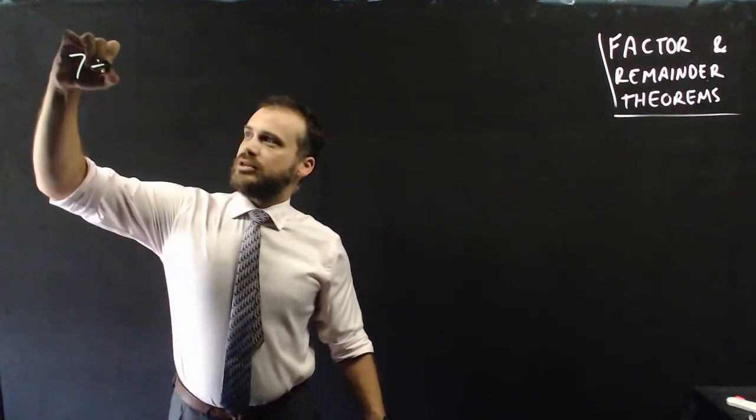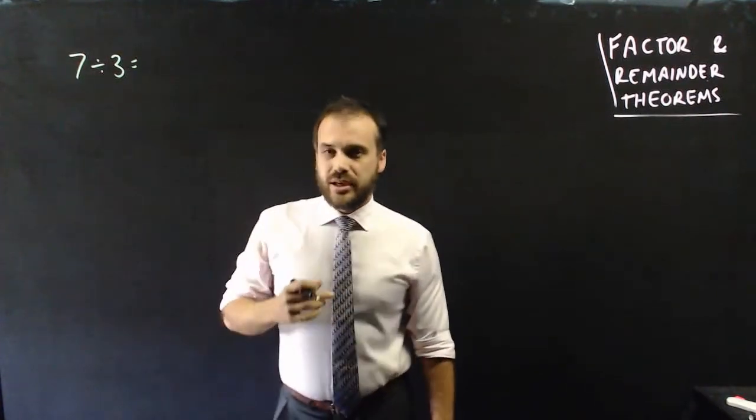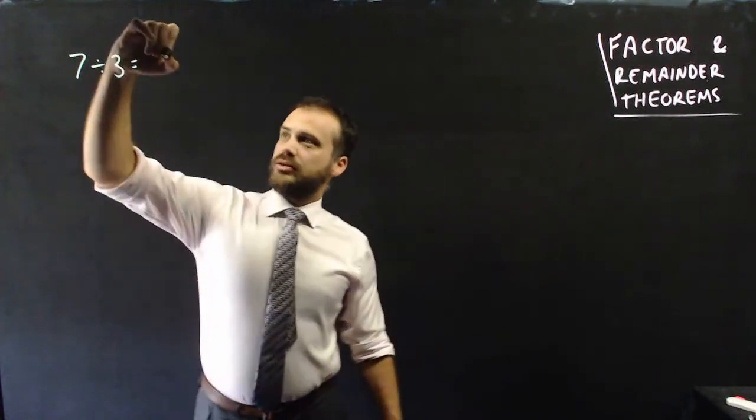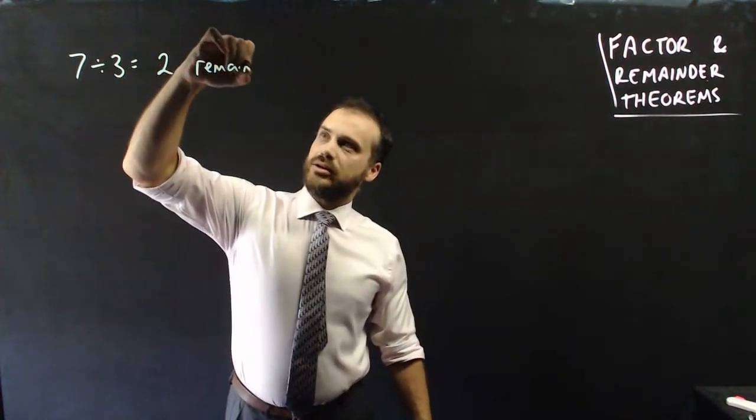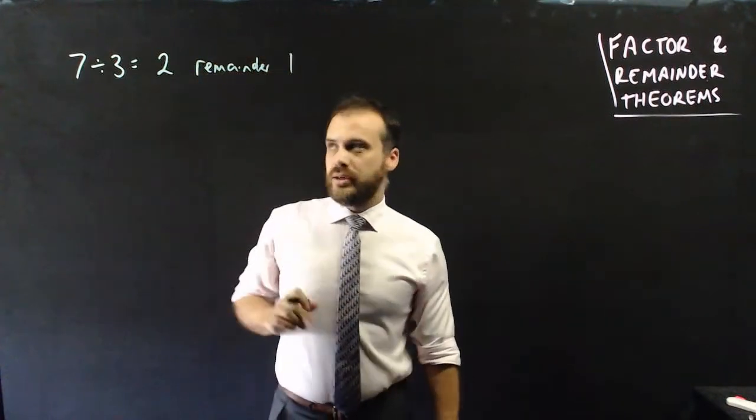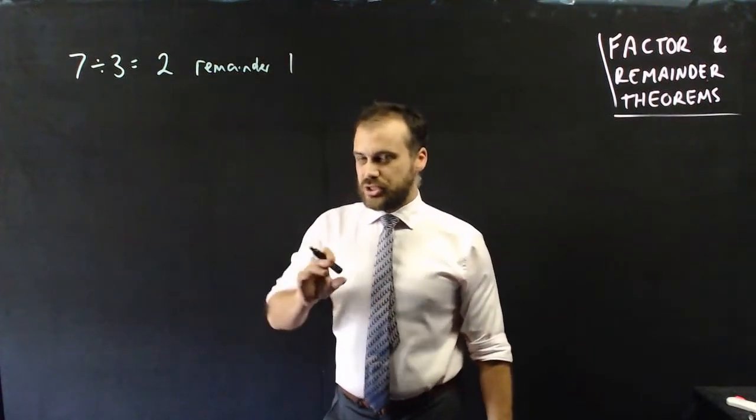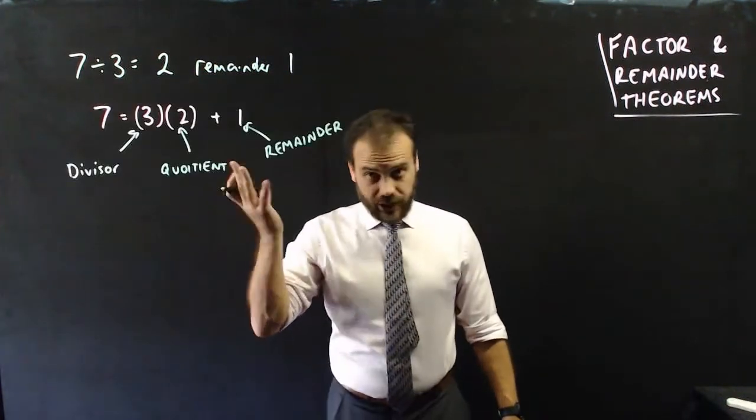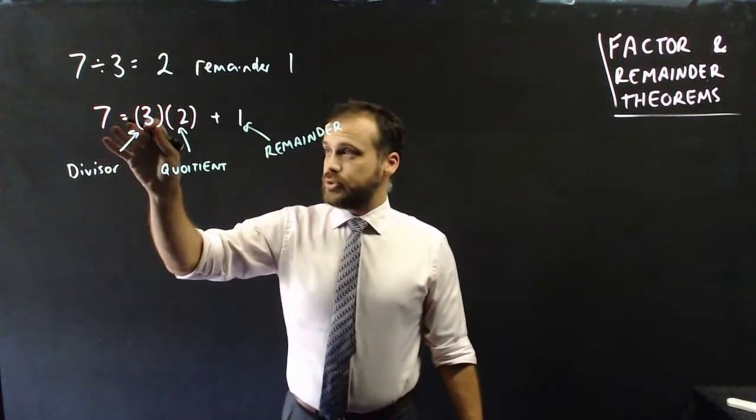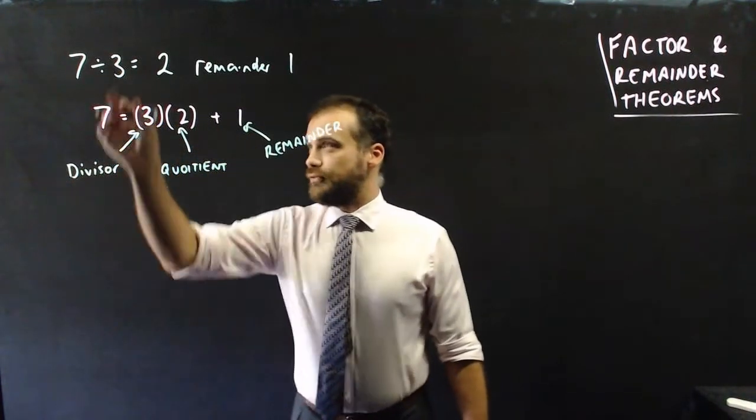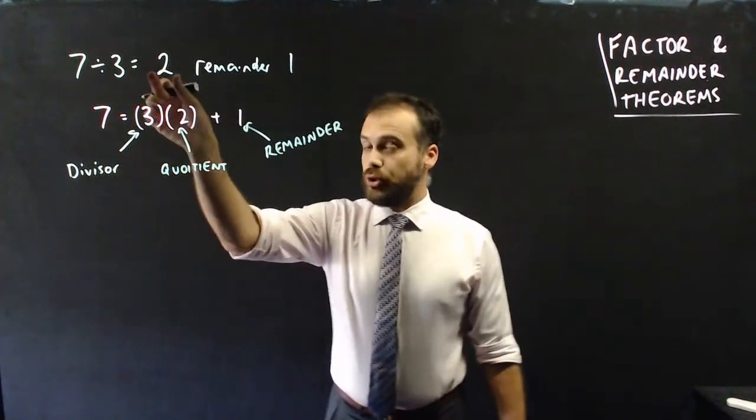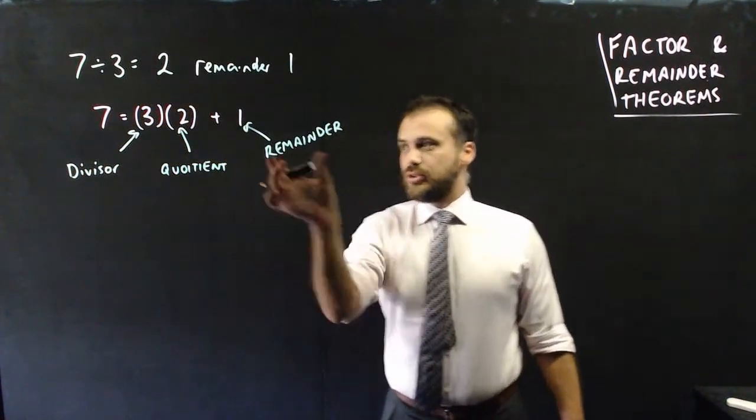Take the number 7 and divide it by 3. Now what would you get? You'd get the number 2 with a remainder of 1. Now I can express this relationship in a particular way. I can say that 7 is equal to 3 times 2, the divisor, times the quotient, the answer, plus the remainder.